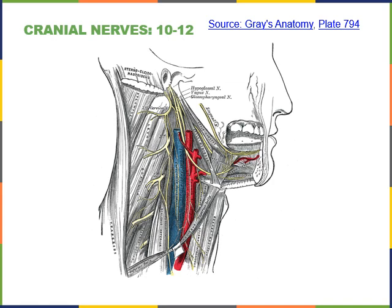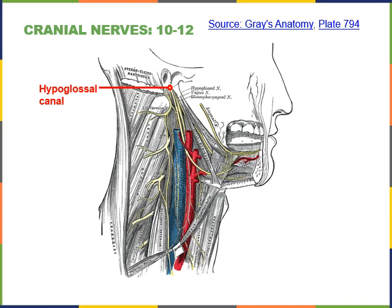The hypoglossal nerve extends down through the hypoglossal canal of the occipital bone, just lateral to the foramen magnum, and extends down into the tongue to excite the contraction of the muscles of the tongue, such as the genioglossus, styloglossus, and hyoglossus.